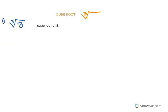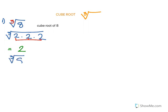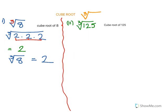Now we will deal with cube roots. The first is cube root of 8. We know that 8 is 2 into 2 into 2. Since it is a cube root, we need to make groups of 3: 1, 2, 3 — so cube root of 8 equals 2.